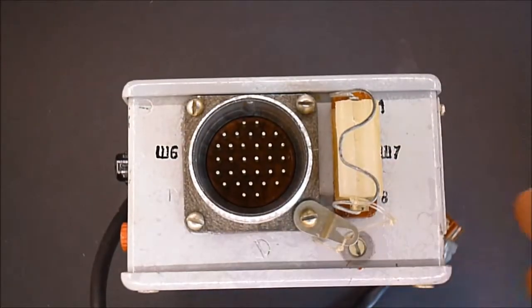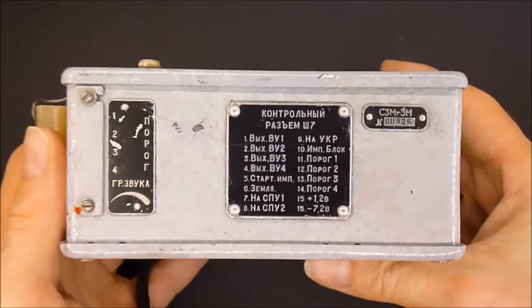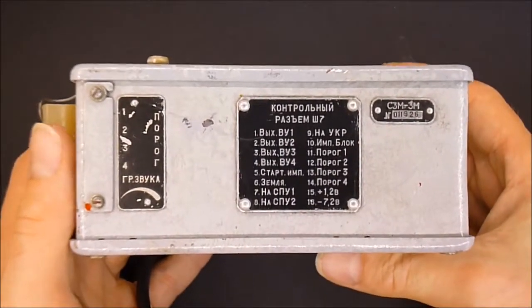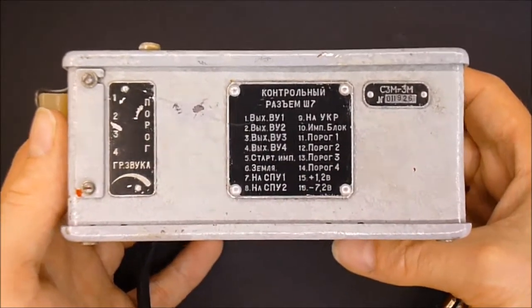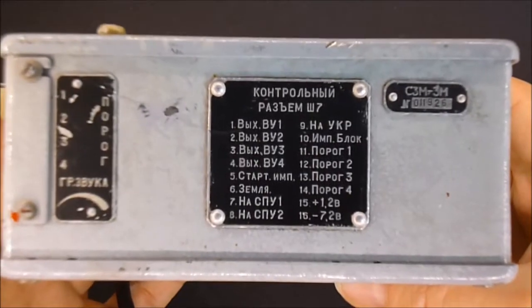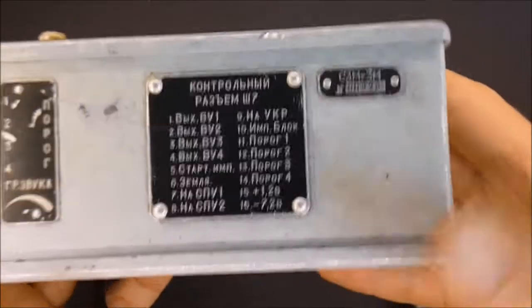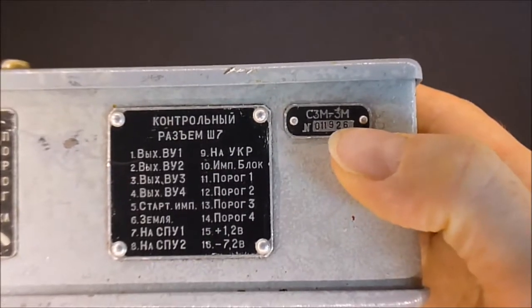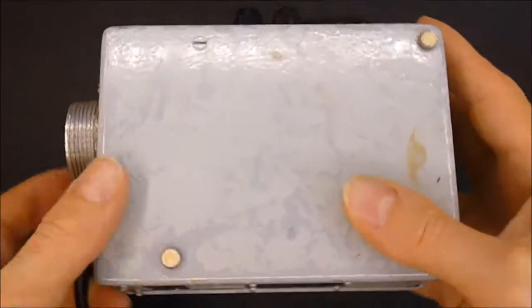I will try to remove it later. Here is the manufacturer plate. You have some trim pots behind there. Here are the test points, and here is the model number and the serial number. I will remove the cover.